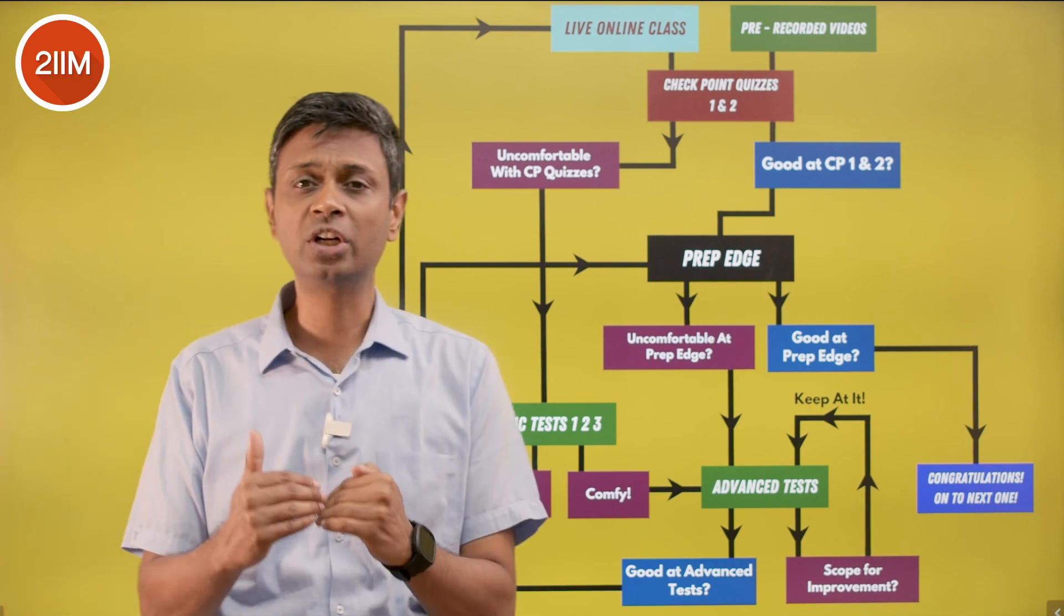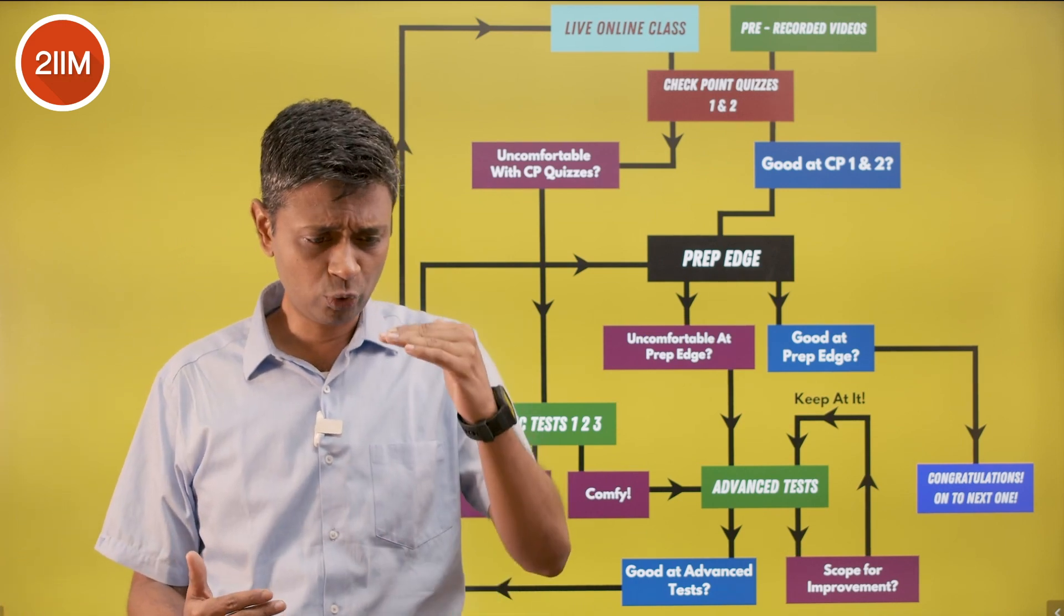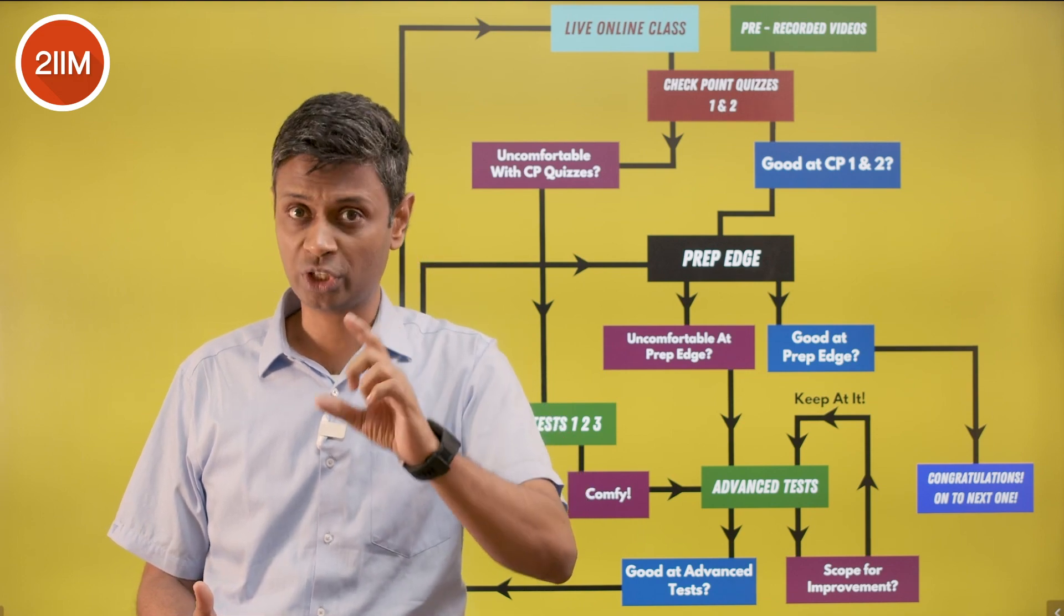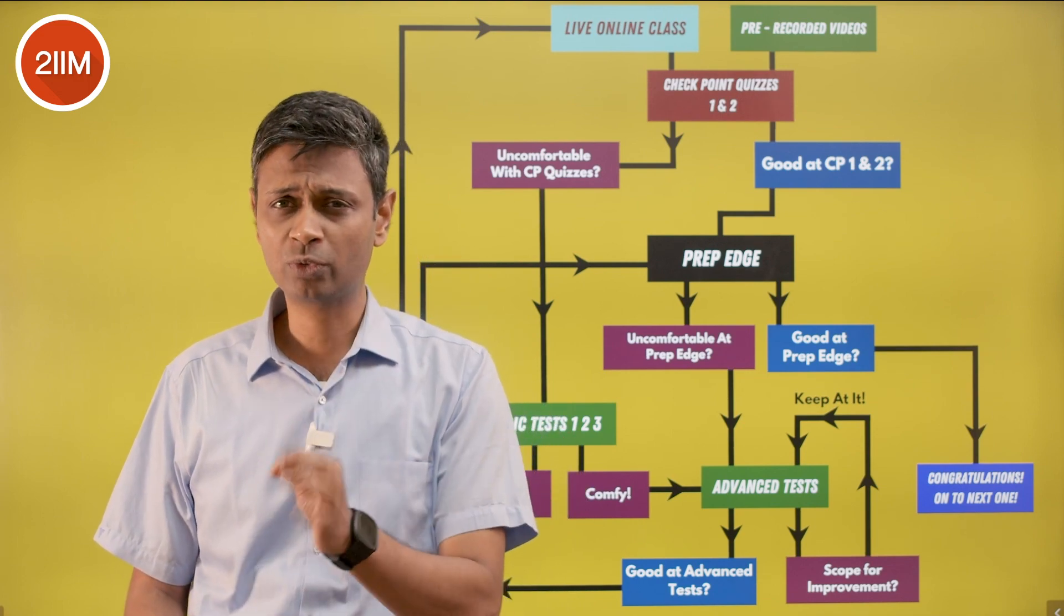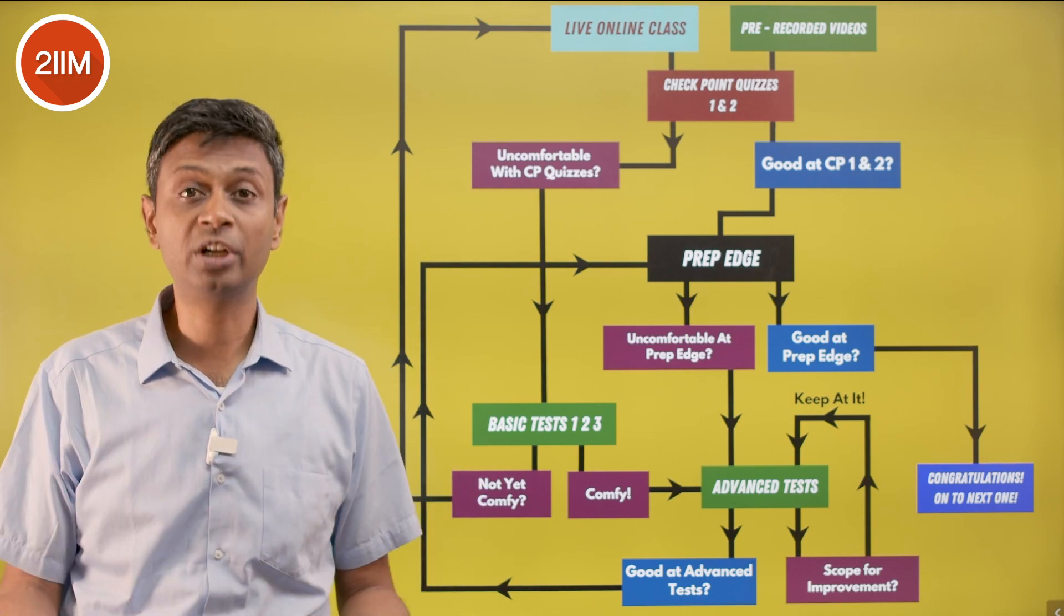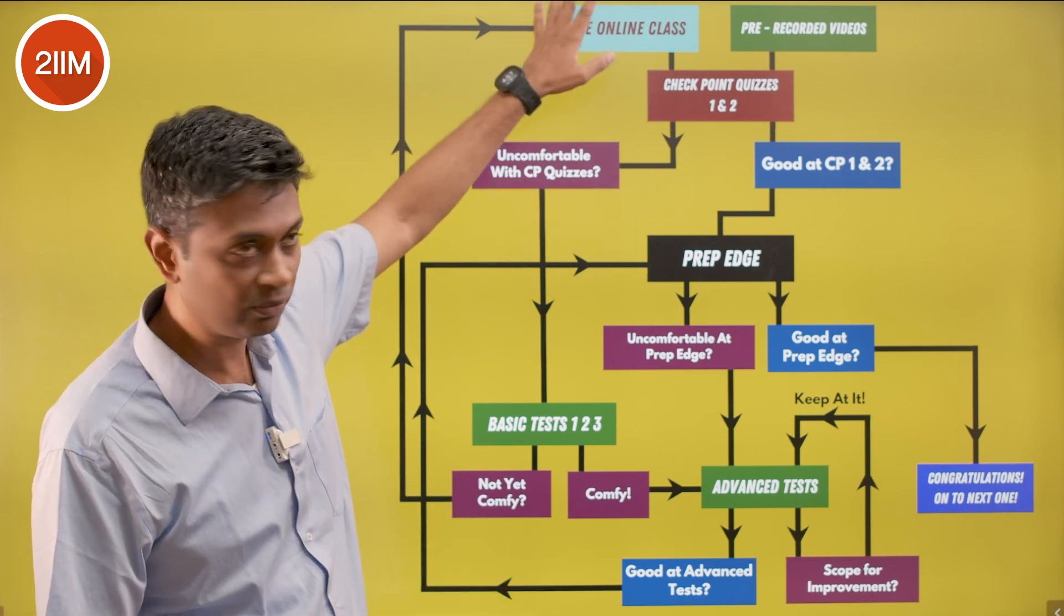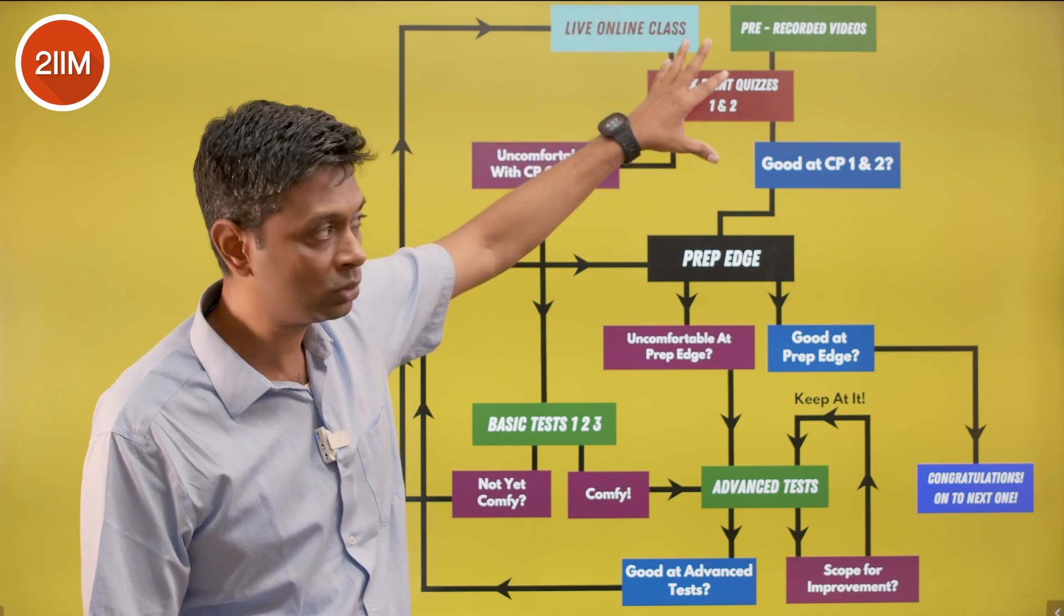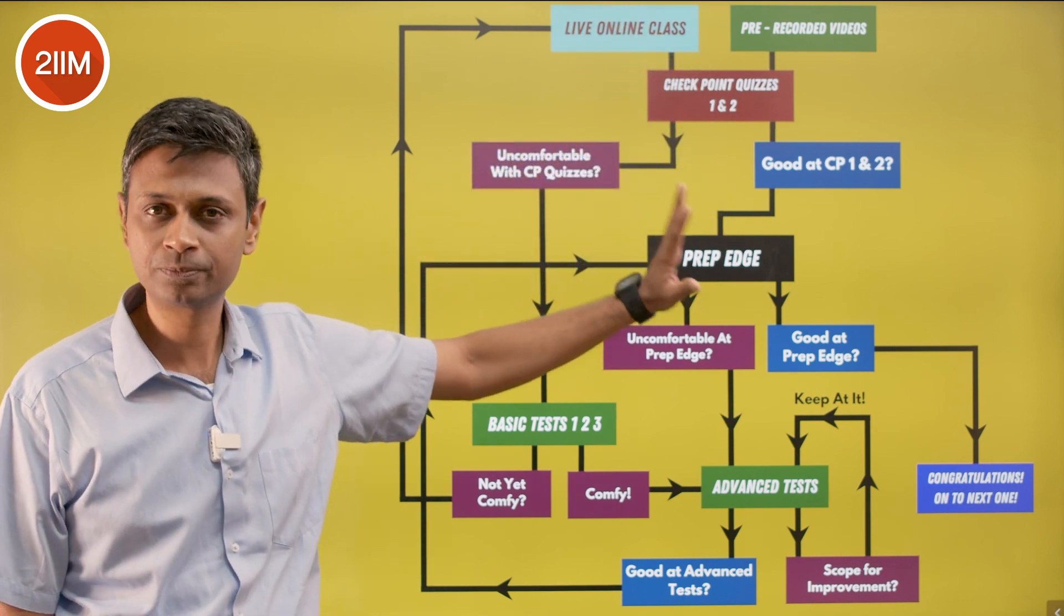After you finish the class, there are checkpoint quizzes for each thing. There are prep edge quizzes for each topic. Suppose you pick a topic like arithmetic geometric progression - you learn something, then there's checkpoint quiz one and two, and then there's a prep edge quiz.